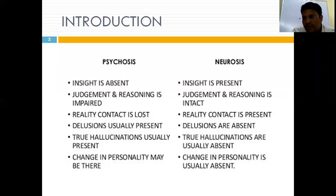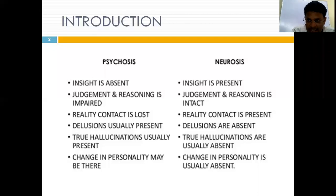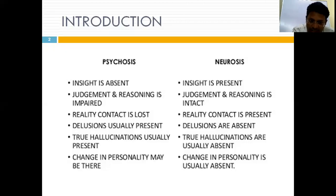First, we should know what psychosis is and what other related disorders are not psychotic. People think that in psychiatry only madness or psychosis exists, but in reality there are many disorders which are not psychotic — we call them neurotic. Whenever we see a psychiatric patient, we should first determine whether the patient is psychotic or neurotic. For example, a wandering lunatic on the road is clearly psychotic.